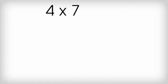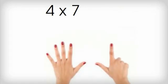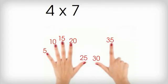Now we're going to do four times seven. So I hold up seven fingers and I count by fives. Five, ten, fifteen, twenty, twenty-five, thirty, thirty-five.